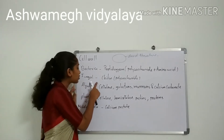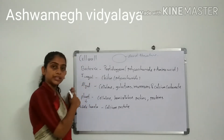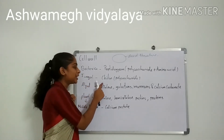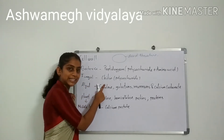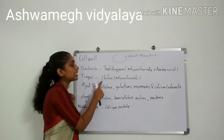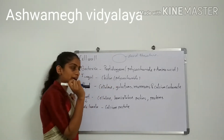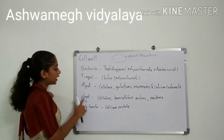Now we will discuss the cell wall of fungi. Fungal cell wall is made up of chitin, which is one kind of polysaccharide.